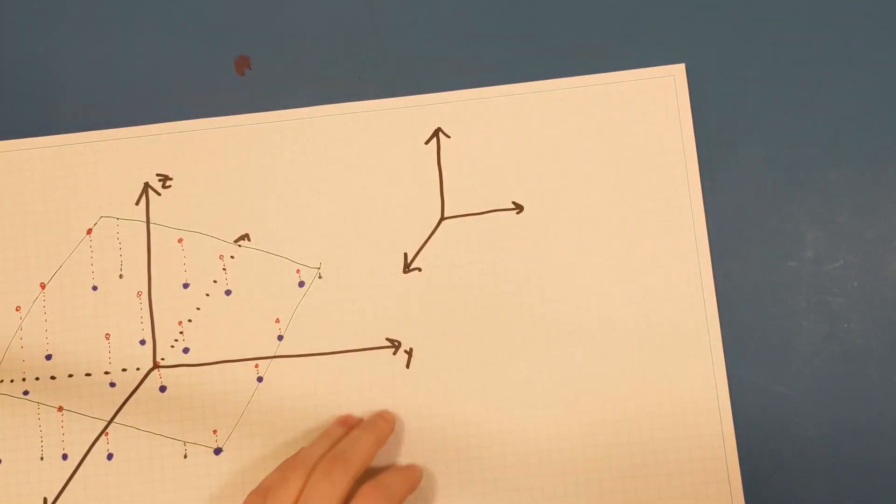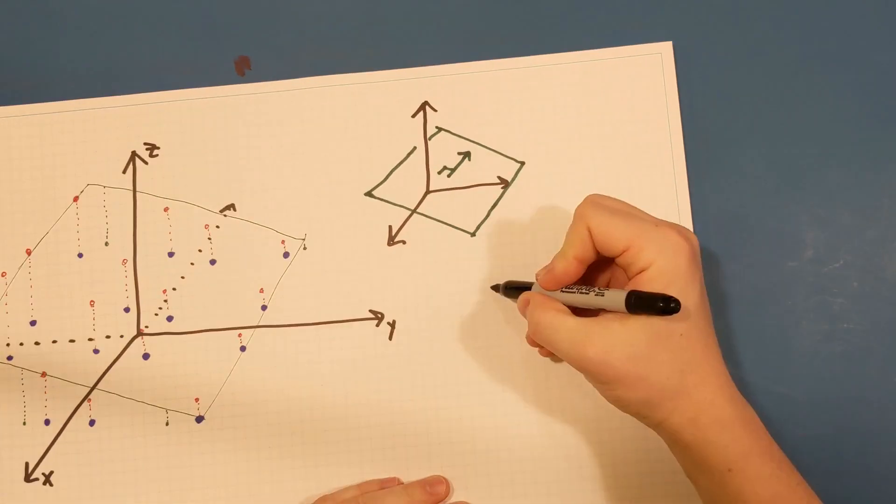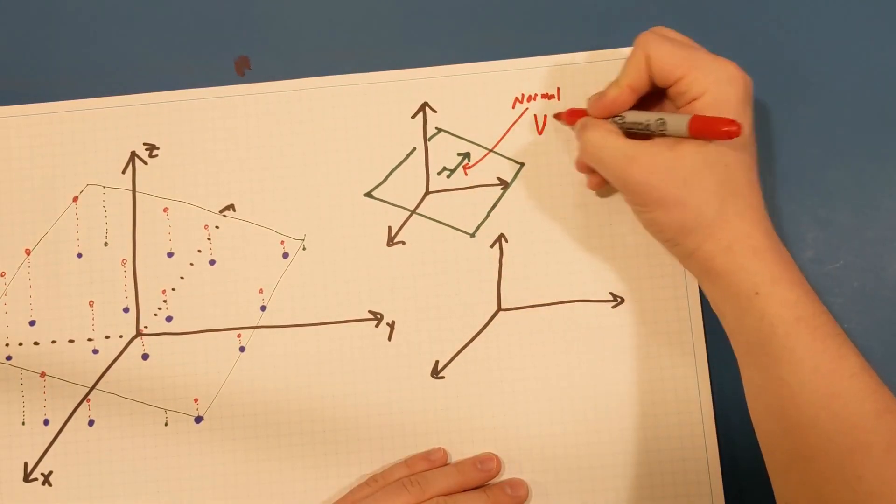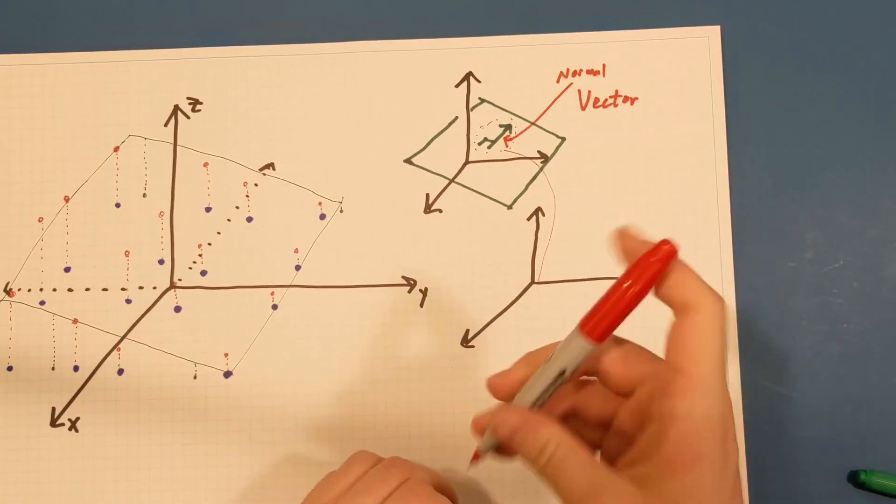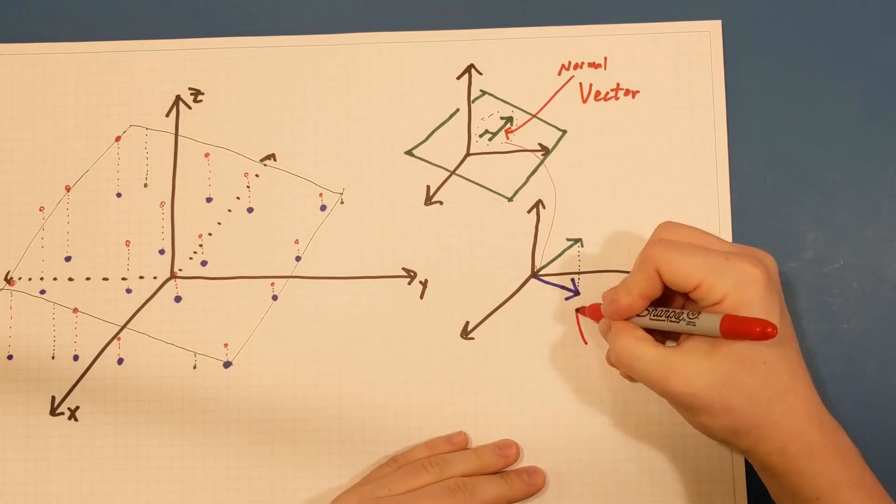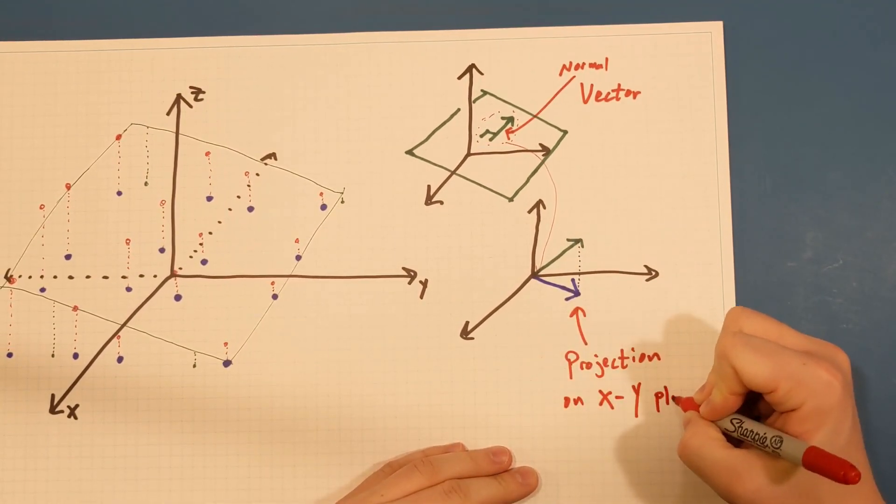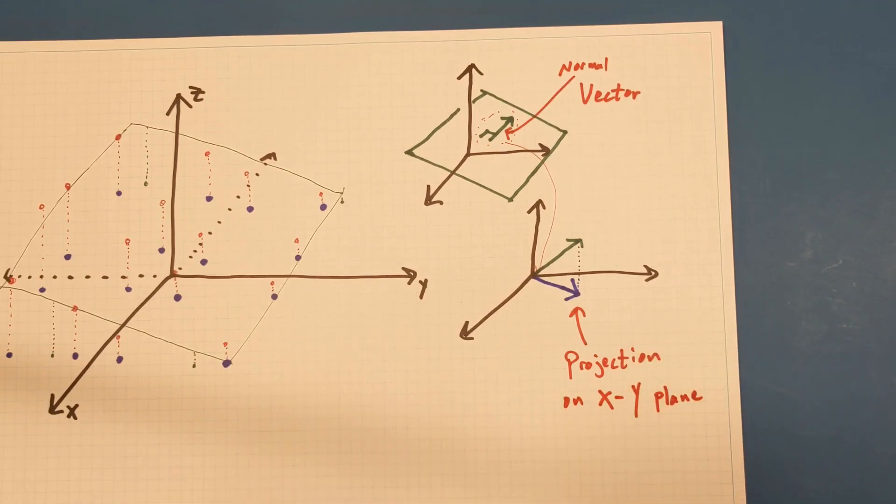Once I have a best-fit plane, I can calculate a normal vector. I then normalize that normal vector and project it onto the XY plane. The XY values I get correspond to the angle of the incoming light. The full code for this and how I actually implement it on my sun sensor can be found in my software repo on GitHub, which is linked in the description below.